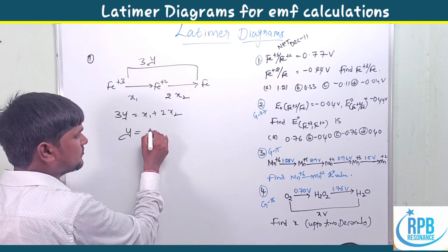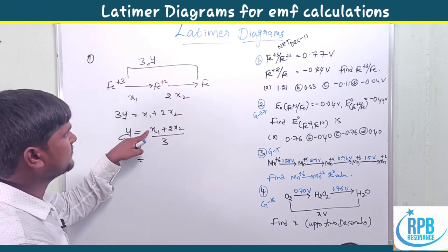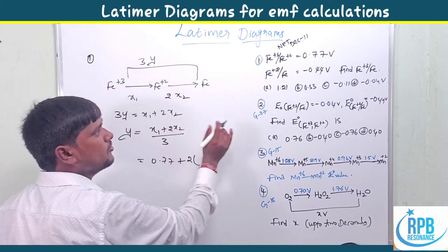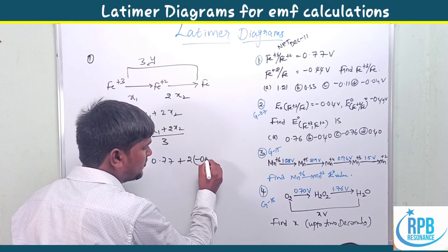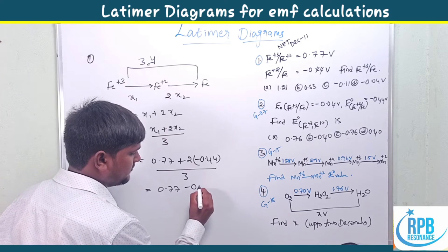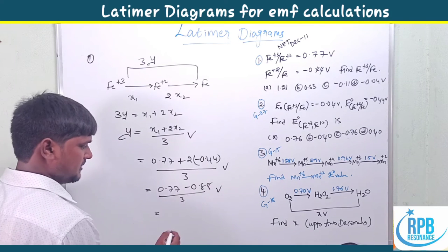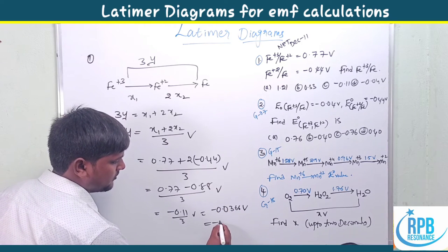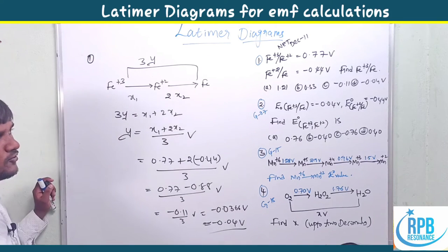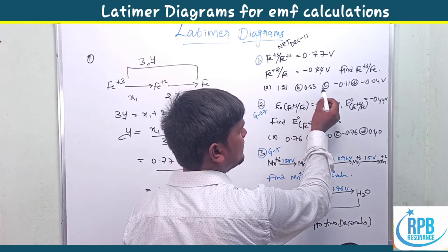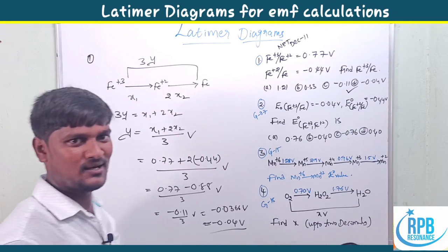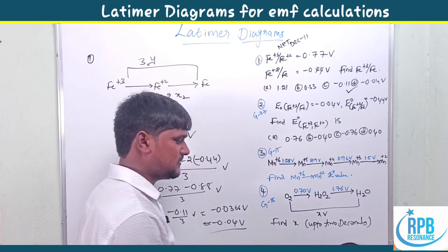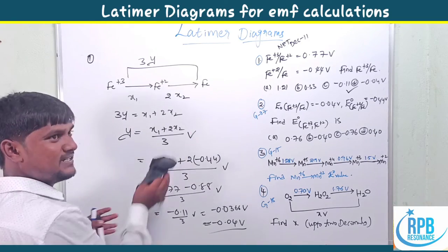Many students confuse 3y for the answer — the correct answer is y. So y = (x₁ + 2x₂) / 3. Substituting: x₁ = +0.77 V (E° for Fe³⁺/Fe²⁺) and x₂ = −0.44 V (E° for Fe²⁺/Fe⁰). So y = (0.77 + 2×(−0.44)) / 3 = (0.77 − 0.88) / 3 = −0.11 / 3 ≈ −0.04 V. The correct option is D (≈ −0.04 V). Using Latimer diagrams solves this within a minute.